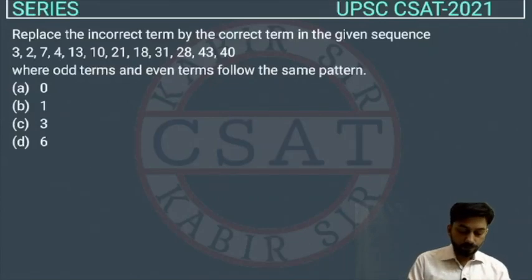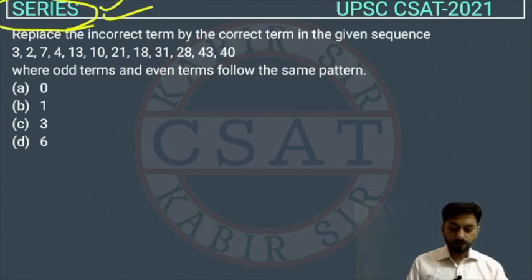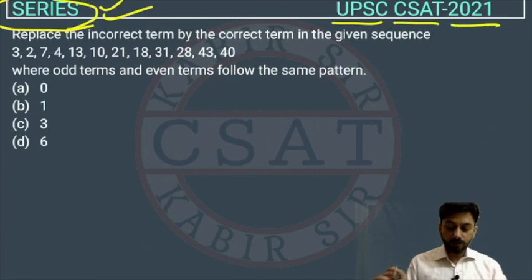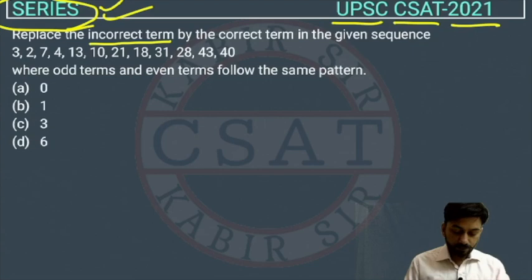This is a reasoning question asked from the chapter on series. This is a reasoning question from the series unit asked by UPSC in their CSAT paper of 2021. We have to replace the incorrect term and find the correct term in the given sequence.